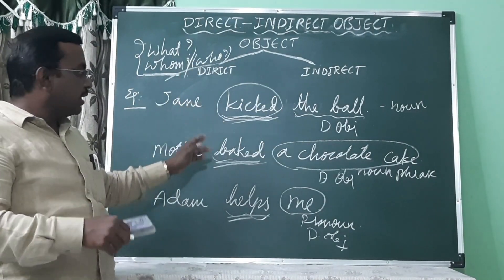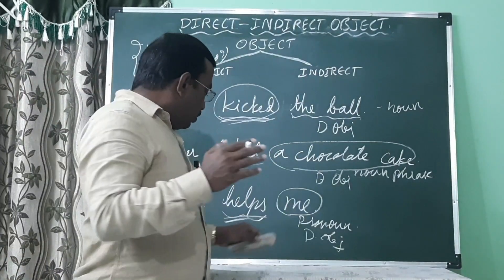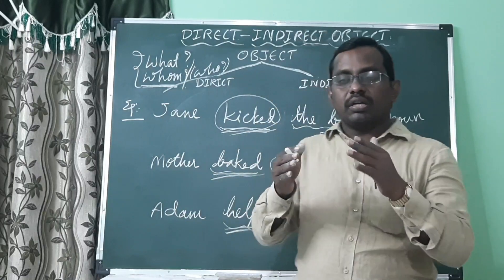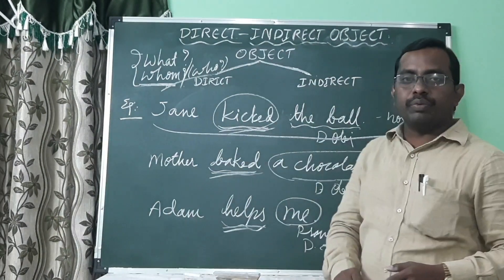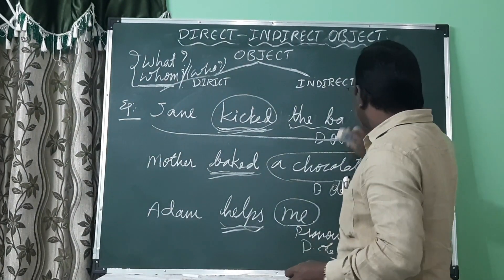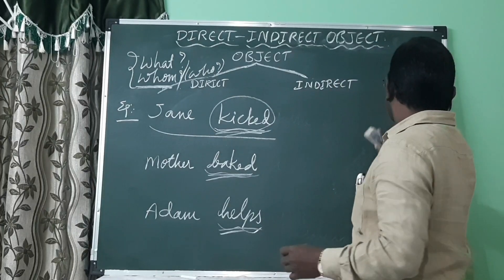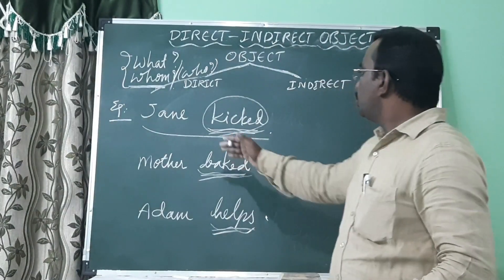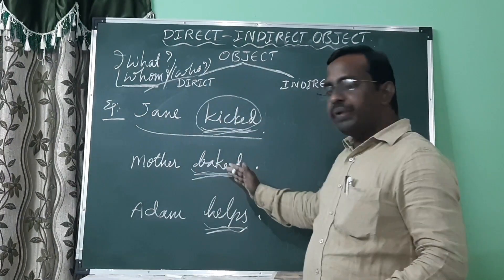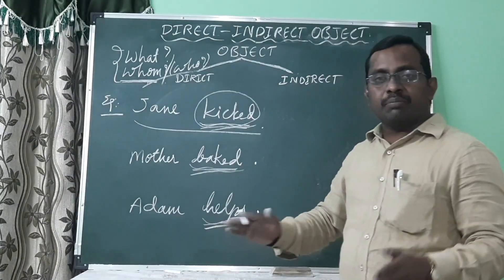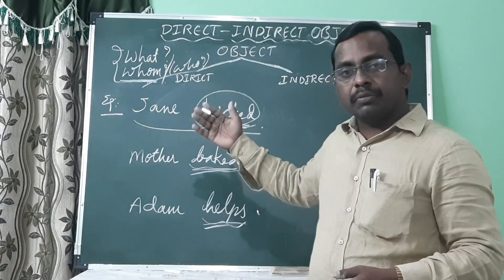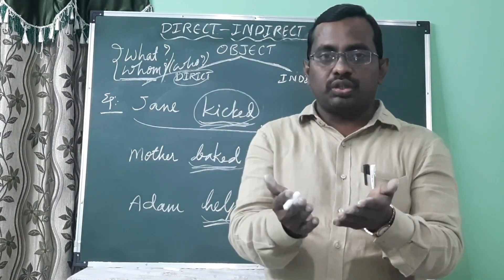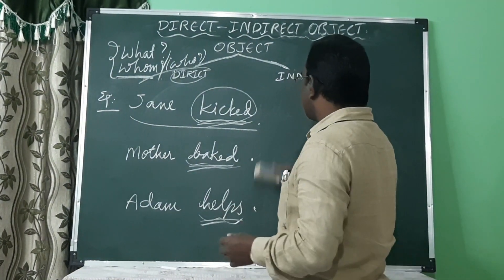That is a direct object — it receives the action directly. Without the direct object, the meaning of a transitive verb is incomplete. If you remove the direct objects: 'Jane kicked' — what did Jane kick? 'Mother baked' — what did mother bake? 'Adam helps' — whom does Adam help? The meaning of all these sentences is incomplete without a direct object. The transitive verb always needs a direct object.